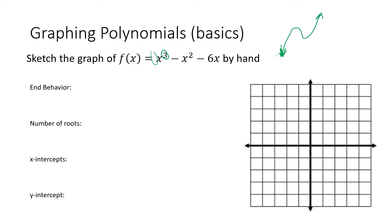The other way we know to say that now is using limit notation: the limit as x approaches positive infinity of f(x) is infinity — it goes up forever. Similarly, in the other direction, the limit as x approaches negative infinity of f(x) is negative infinity. As we have really big negative x values, we'll have really big negative y values.